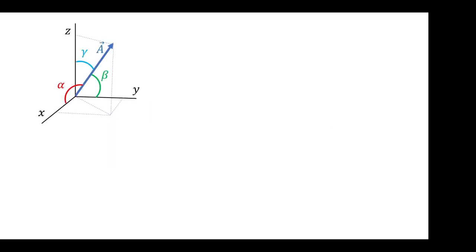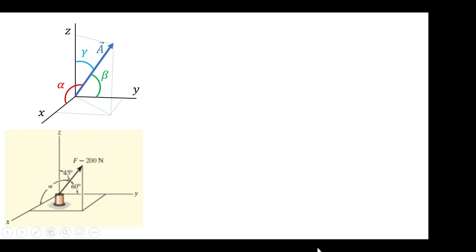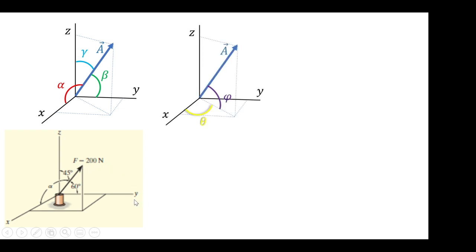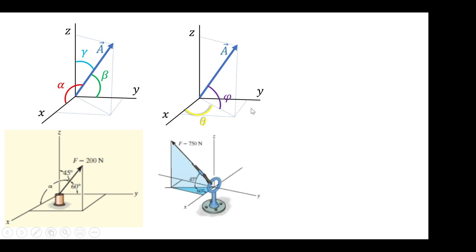An example of a problem involving alpha, beta, and gamma: here, alpha is unknown, the magnitude is given, beta is given, and gamma is given. We will solve first for alpha to find the Cartesian vector of F. In another example, the transverse angle and the azimuth angle are both given, and we will use those to find the Cartesian vector of F.